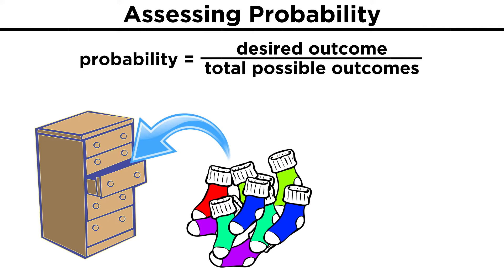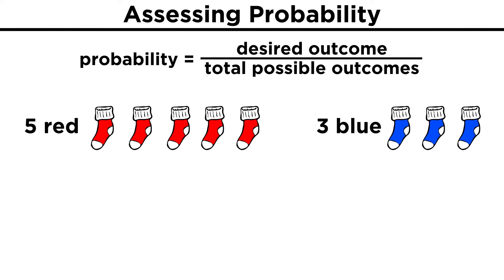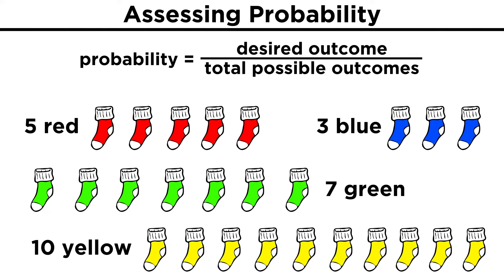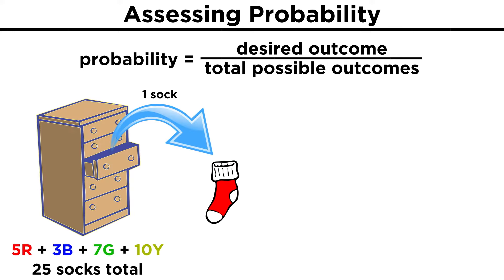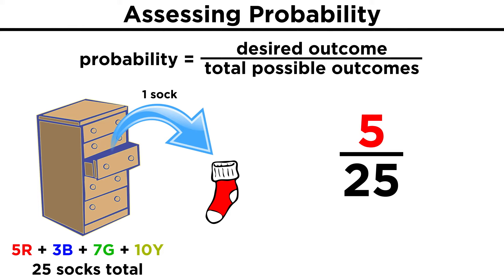Sometimes the desired outcome isn't limited to a singular event. Let's say you have a bunch of socks in a drawer: five are red, three are blue, seven are green, and ten are yellow. If you reach in and pull one out at random, what is the probability that it will be red? The number of outcomes that will produce the event of getting a red sock is five, because there are five of them. Then we divide that by the total number of socks, which is twenty-five. That gives us 0.2, or twenty percent.